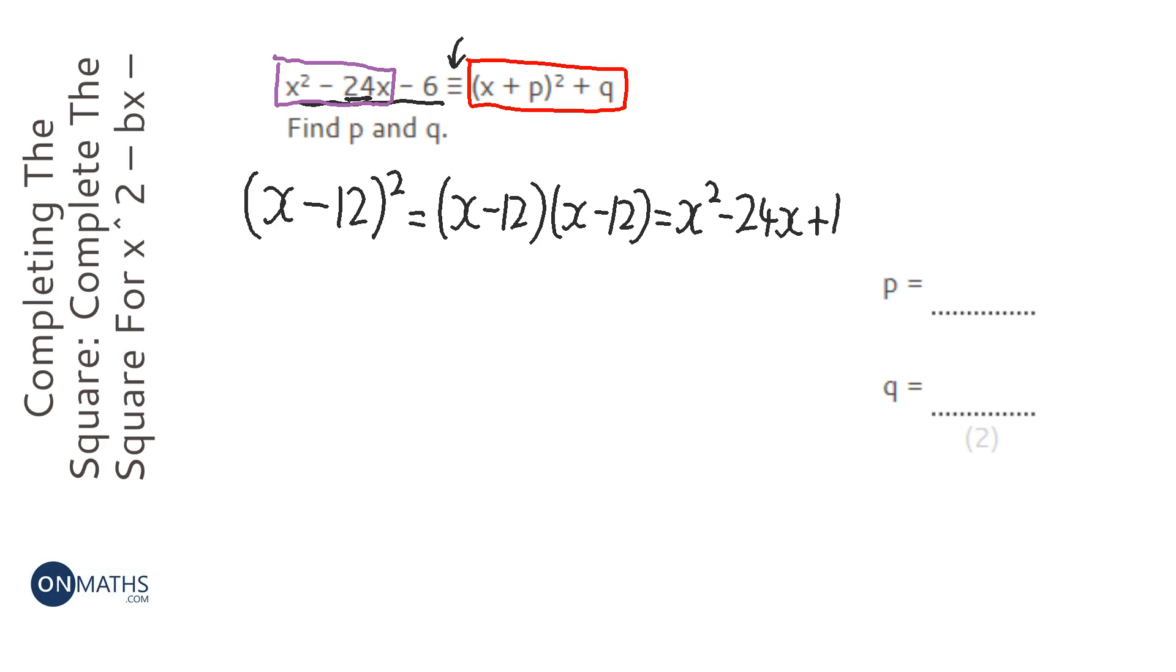But then we've got that plus 144. Now that bit there is going to be an issue, because we need to deal with that. So I'm going to rewrite the question, but putting it into brackets. So we've got the x minus 12 squared, brilliant. But then I know that that will create 144 I don't want. So I'm going to have to take away 144.